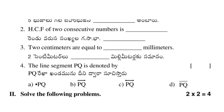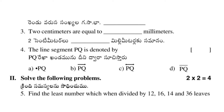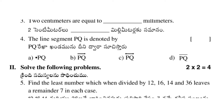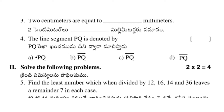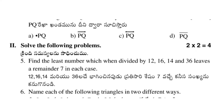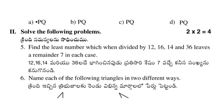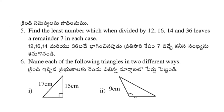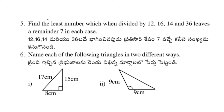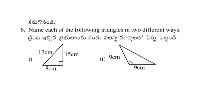First, four choices are given, each carrying one mark. Then in the second roman numeral section, two questions are given, each carrying two marks — that's four marks total. There is no choice in this section.